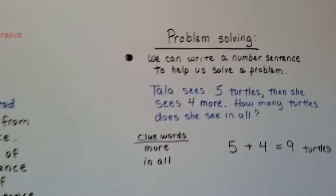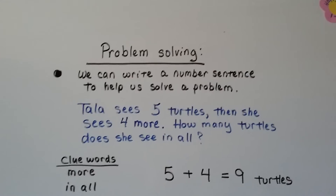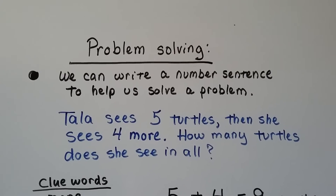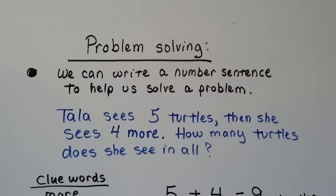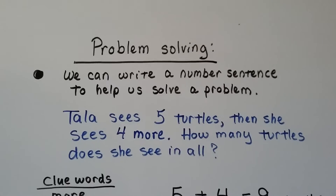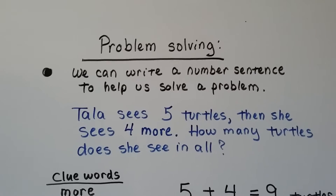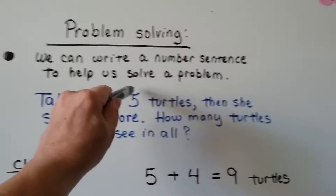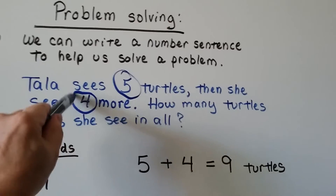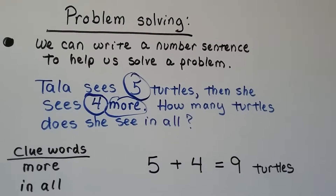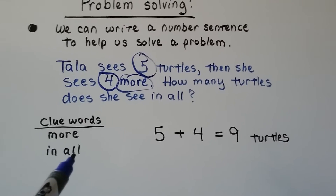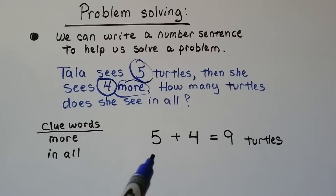We can do problem solving. We can write a number sentence to help us solve a problem. Tala sees five turtles, then she sees four more. How many turtles does she see in all? The first thing we need to do is circle our important information. We know that she sees five turtles, then she sees four more. Our clue words are 'more' and 'in all' — that tells us it's an addition sentence.